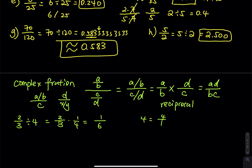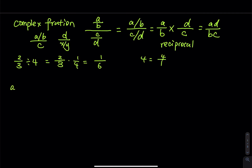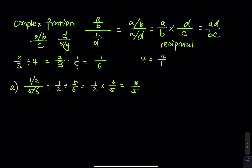Let's try three complex fractions and convert them to decimals. Part A: convert 1 half divided by 5 over 6. That is 1/2 multiplied by the reciprocal 6 over 5. The 2 and 6 can be simplified — 6 divided by 2 is 3 — giving 3 over 5. Then 3 divided by 5 equals 0.6.